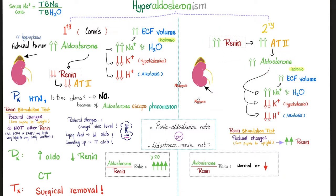Today we talked about the plasma renin activity assay, but it's not the only renin test available. Other tests include the renal vein renin assay, the renin stimulation test, and the captopril test with plasma renin activity. We'll discuss all of these in upcoming videos in this labs playlist.